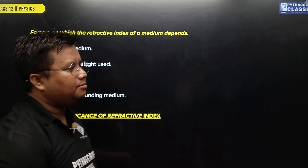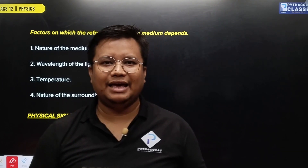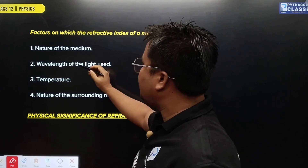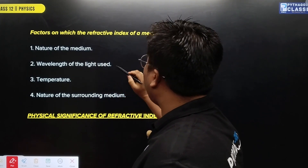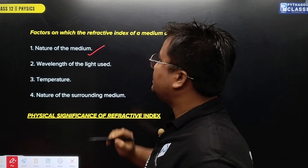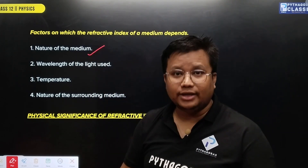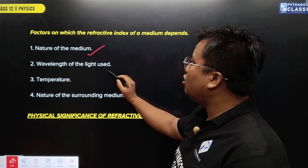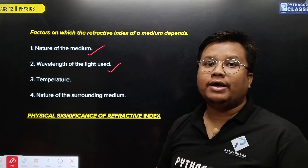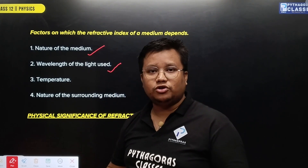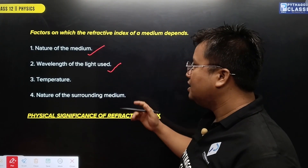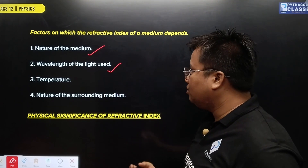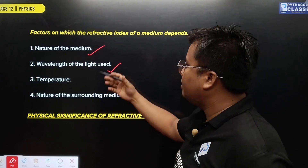Refractive index is a property of the medium — it is a factor of the medium. The refractive index depends on the wavelength of light used, as different wavelengths give different values of refractive index.